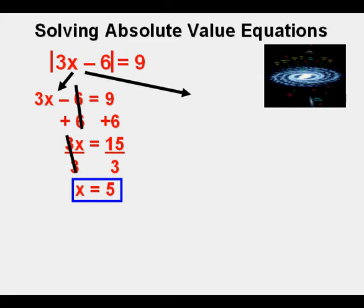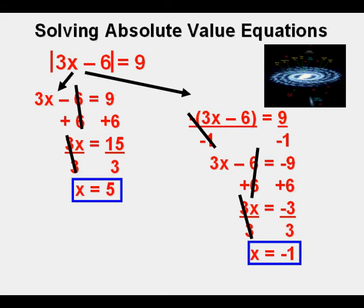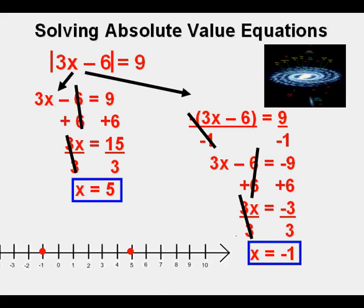Now we go to the alternate universe by replacing the brackets with parentheses and putting a negative sign in front. We get rid of the negative sign by dividing both sides by negative 1. We cancel on the left. Now we remove the parentheses and bring both sides down and add 6 to both sides and cancel on the left. We bring both sides down. Now we divide both sides by 3, cancel on the left, bring both sides down. x equals negative 1. We can graph the solutions with 2 points on the number line.